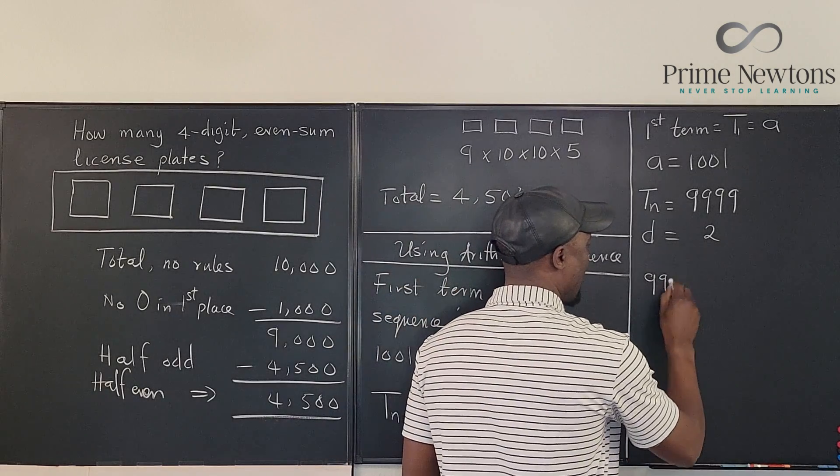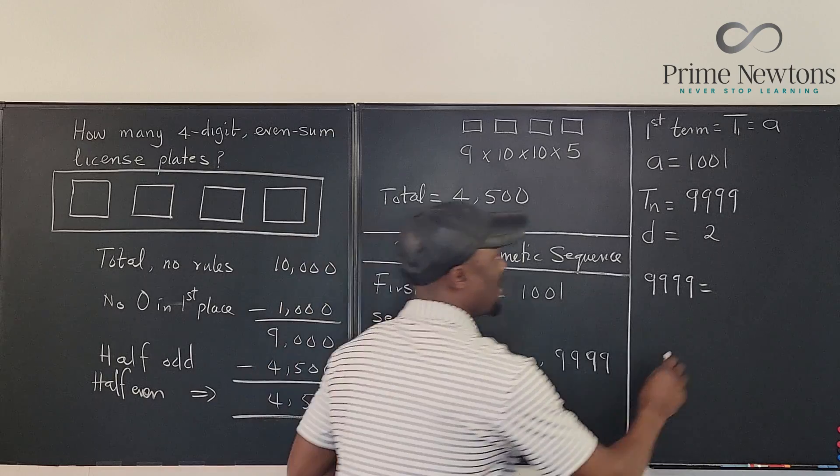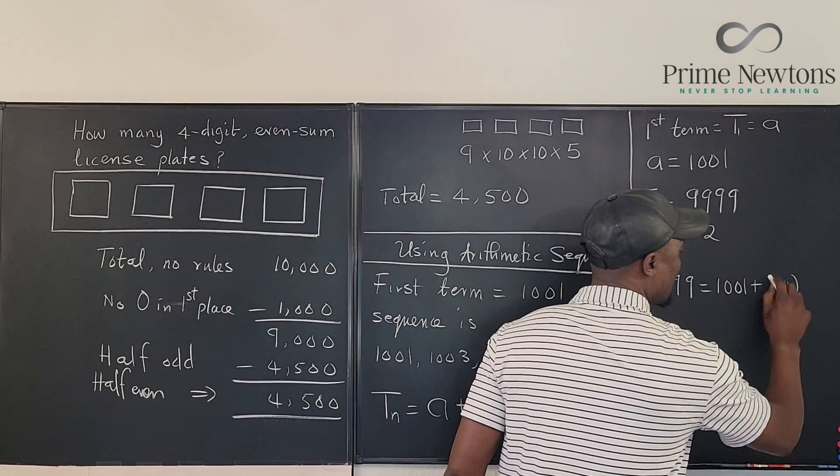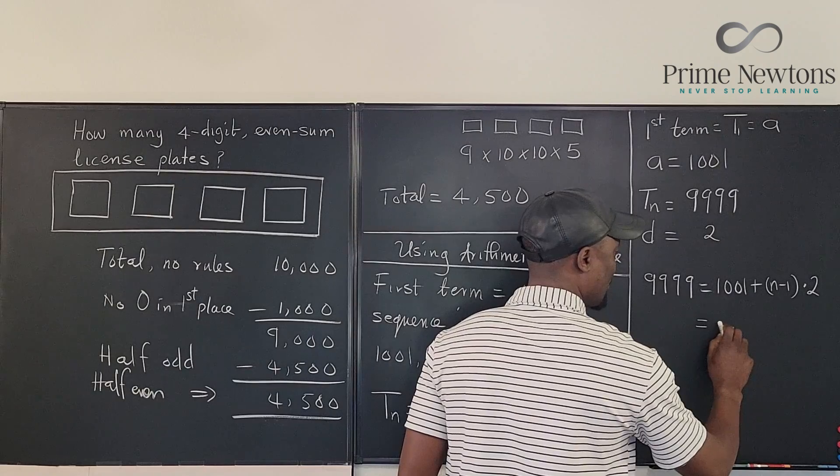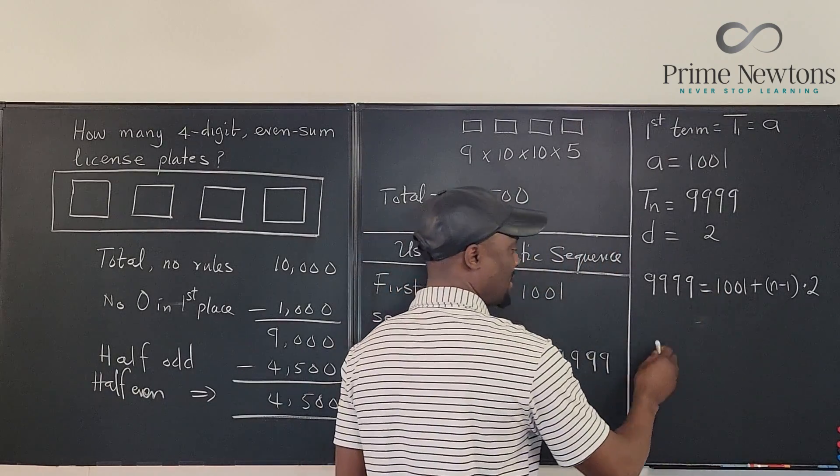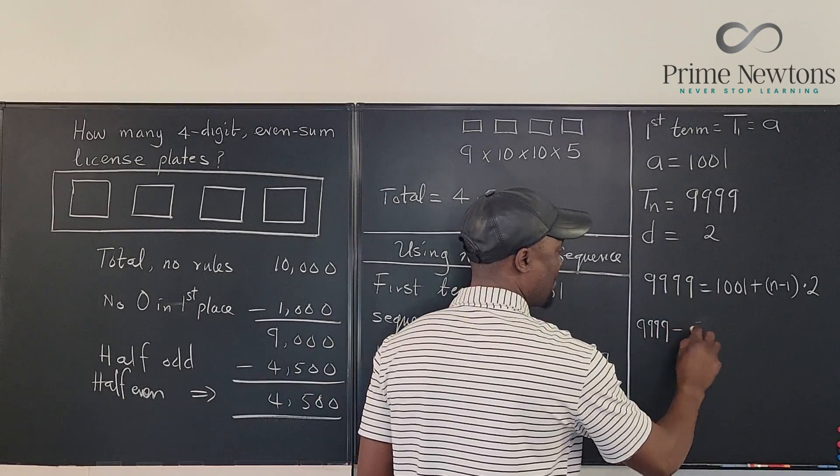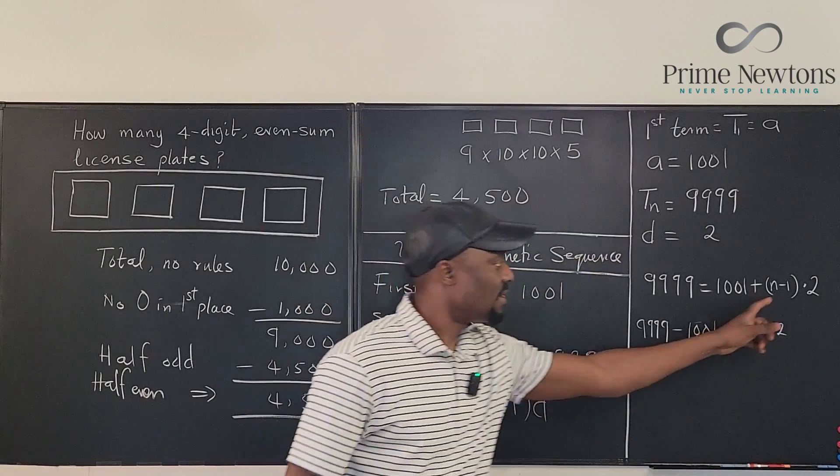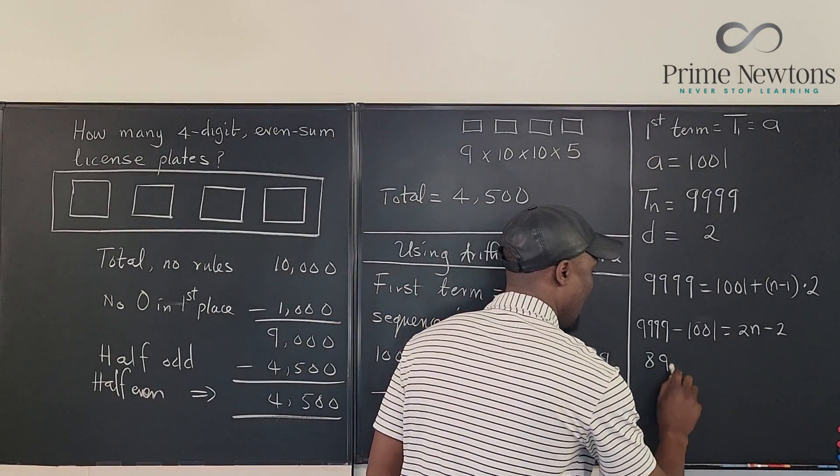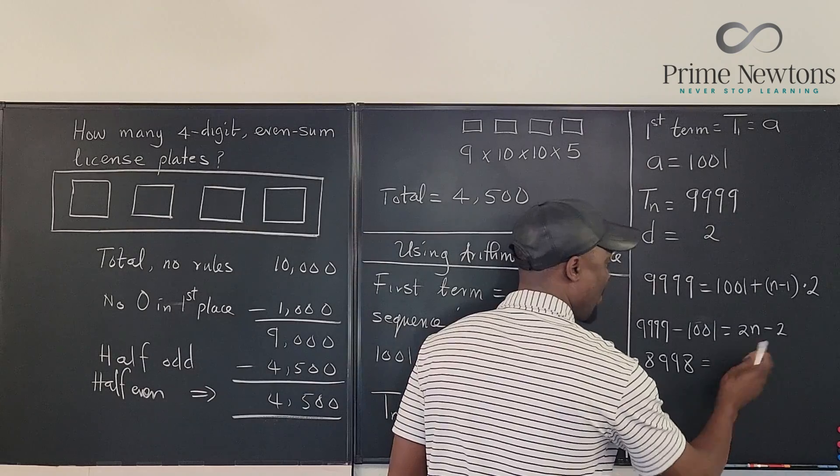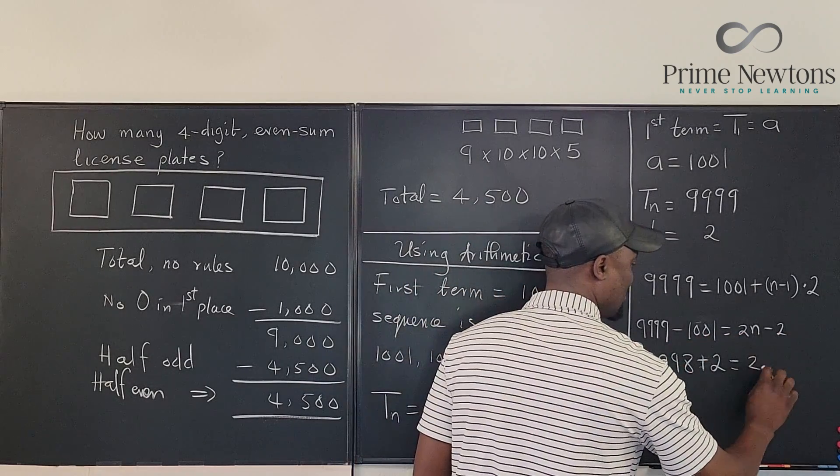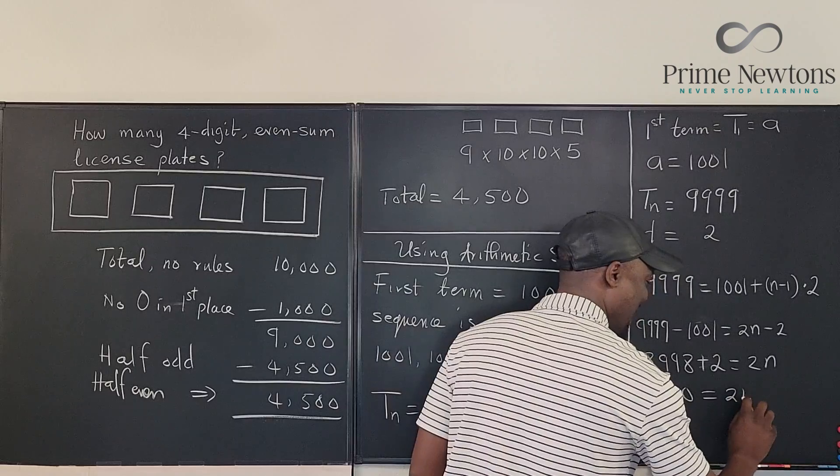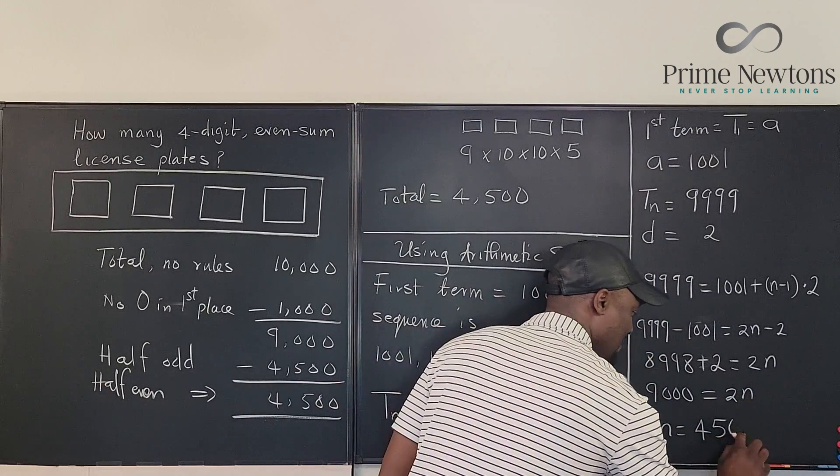So here we go. We have 9,999 is equal to the first term 1,001 plus n minus 1 times 2. This is going to be 9,999 minus 1,001 equals 2n minus 2. I distributed this. So if we do this subtraction, we're going to get 8,998 equals... And we can move this 2 here. So we add 2 plus 2 equals 2n. If we add 2 to this, we get 9,000 equals 2n. So that our n is 4,500.